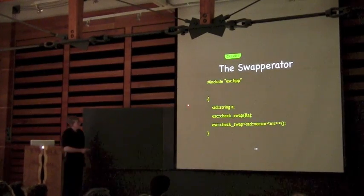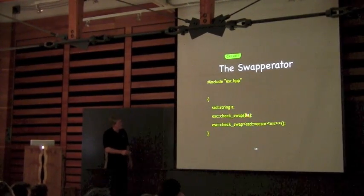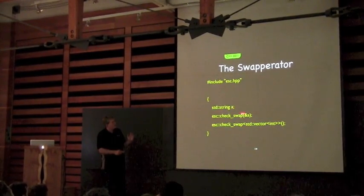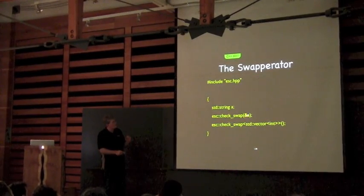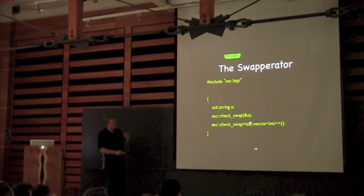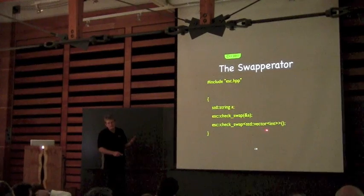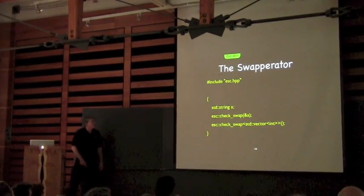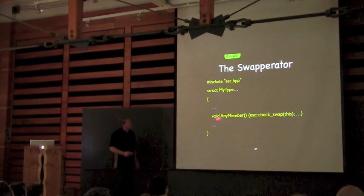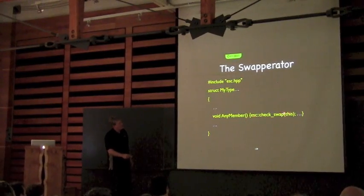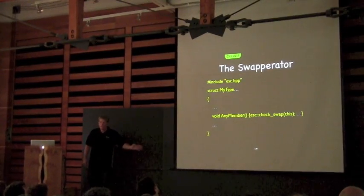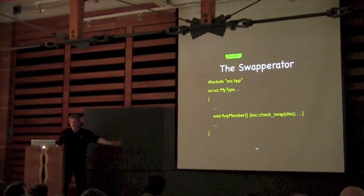Here's how you might use it. I create a standard string and pass the address of a standard string. This check is done entirely at compile time. You could also ask: is the standard vector of int properly declaring swap? And it turns out yes, these things compile. Here's how you're more likely to use it: suppose you're declaring your type — anywhere in any of your members, you just say check_swap on this, and at compile time it will verify that your declarations of your move operations, destructor, and swap are all correct.